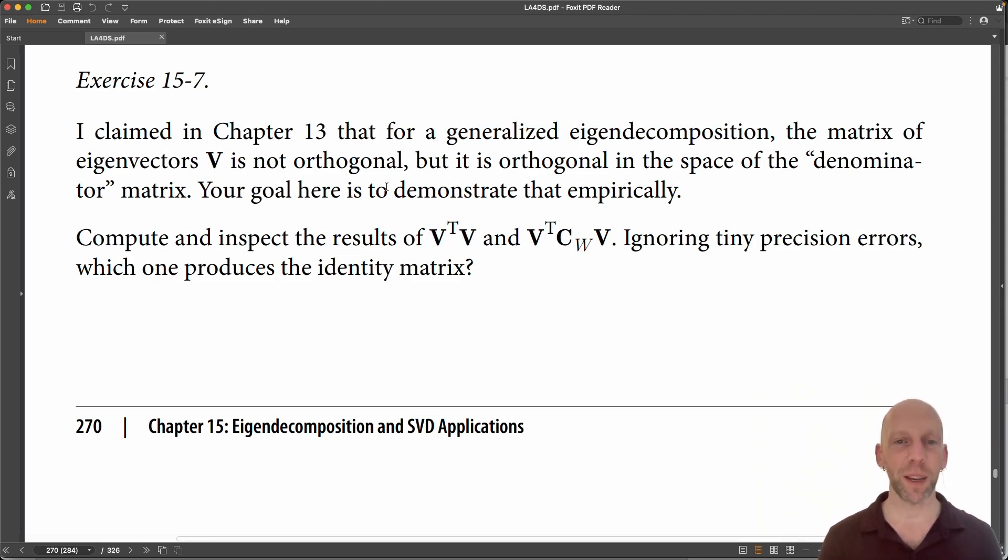However, the eigenvectors matrix is orthogonal in the space of the denominator matrix, so to speak. So that means that V transpose C_W V does equal the identity matrix.